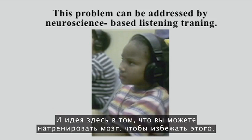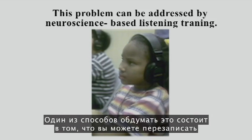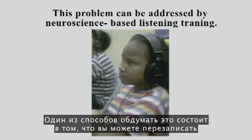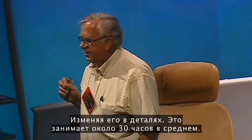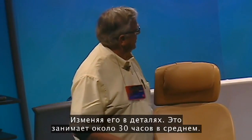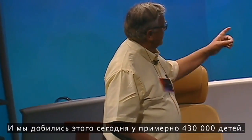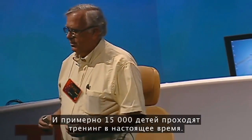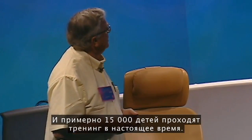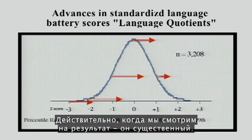The point is that you can train the brain out of this. You can actually re-refine the processing capacity of the machinery by changing it — changing it in detail. It takes about 30 hours on average, and we've accomplished that in about 430,000 kids today. About 15,000 children are being trained as we speak. And when you look at the impacts, the impacts are substantial.